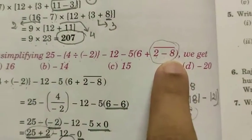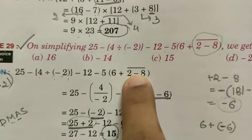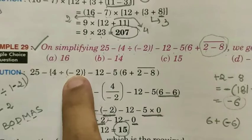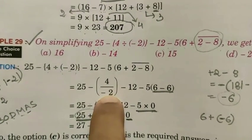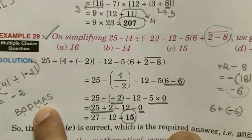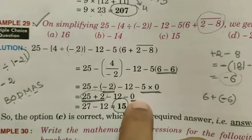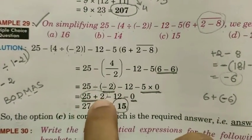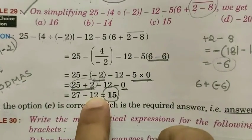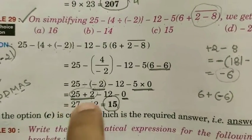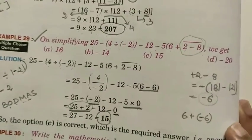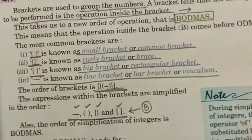There is a plus 2 here. After the bracket operations, the multiplication comes: 5 into 0 equals 0. Then addition: 25 plus 2 — since this is minus minus, which becomes plus — so 25 plus 2 equals 27. At last we perform the subtraction: 27 minus 2 equals 15. So it is really very easy — we just follow the sequence step by step.